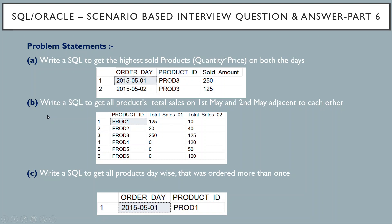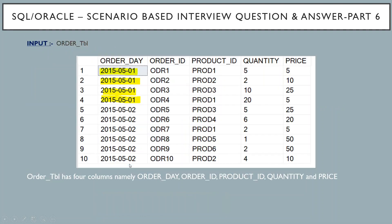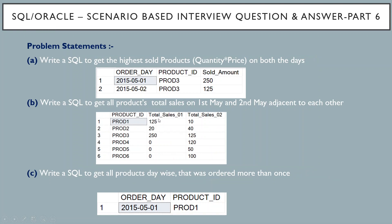The second question: write a SQL query to get all the products' total sales on 1st May and 2nd May adjacent to each other. Total distinct product IDs present in the main table are product 1 to product 6 — we have product 1, product 2, product 3, product 5, product 6, and so on. So there are 6 distinct products. We want the total sales for each product on 1st May and on 2nd May displayed adjacent to each other.